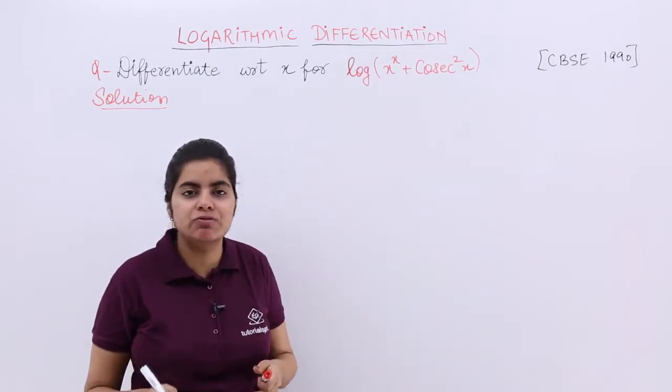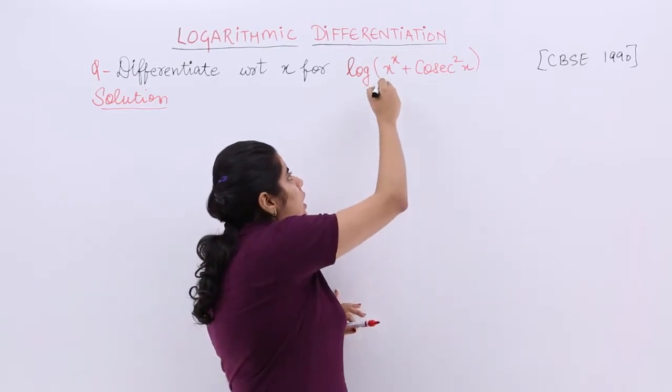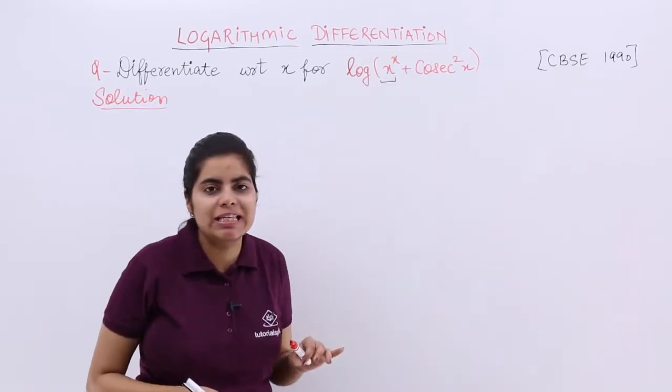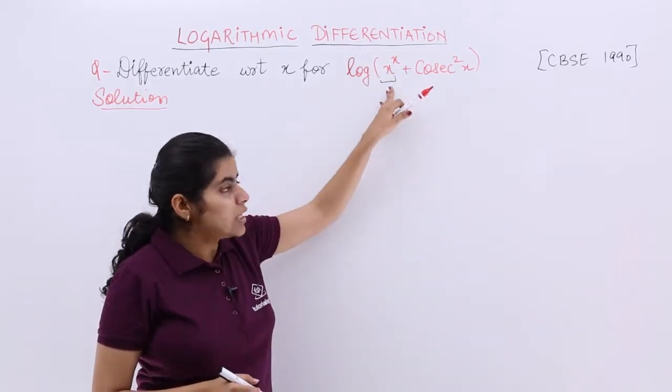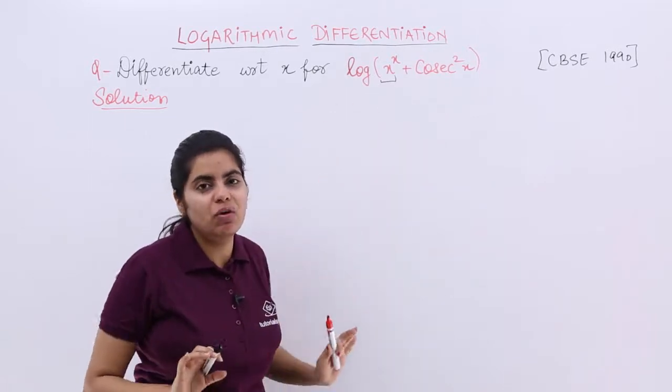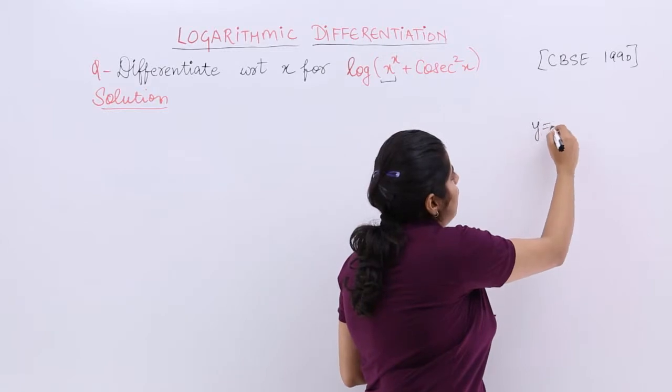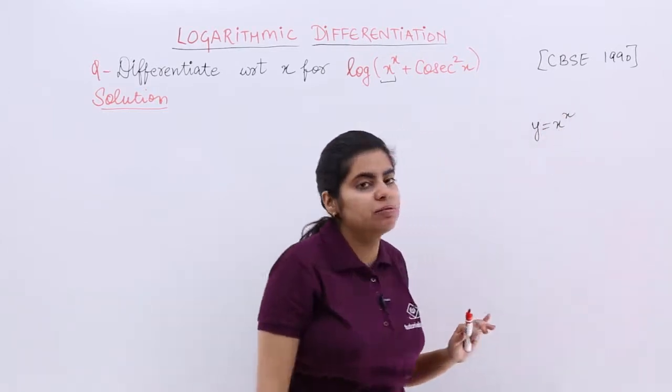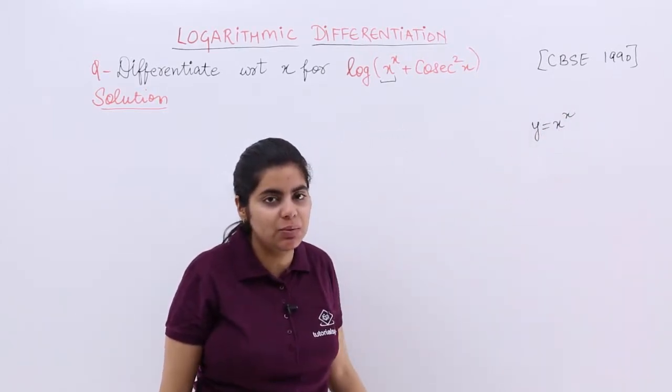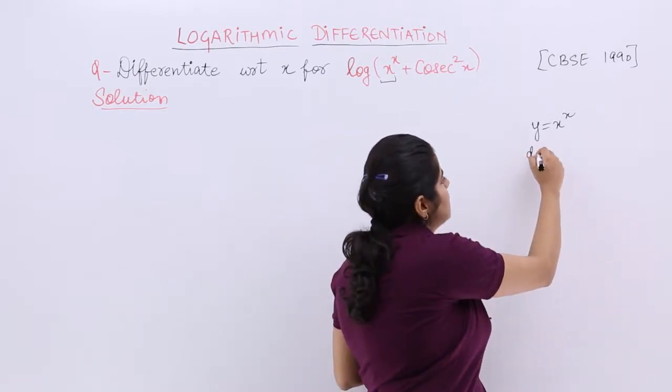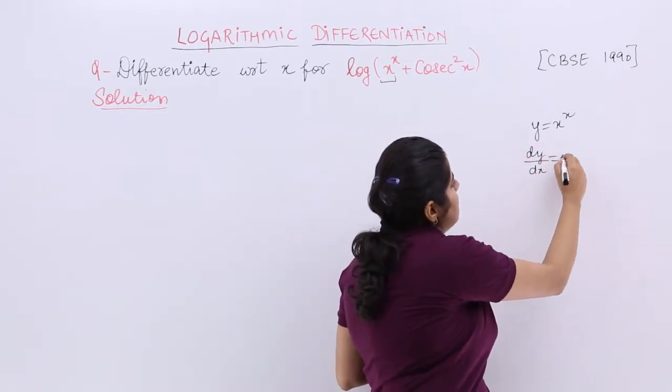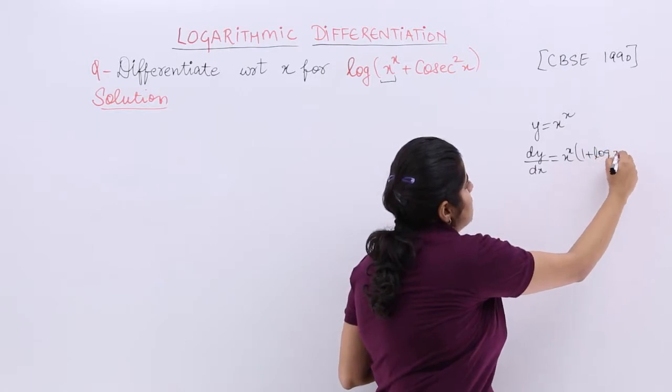Now if you've been watching the previous videos, this function x^x has a differentiation that we already solved in the first video. Remember, the first video on logarithmic differentiation had this question: y = x^x. What was the answer? dy/dx = x^x(1 + log x).